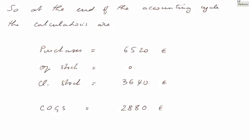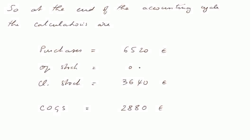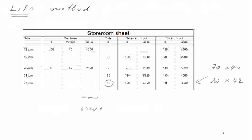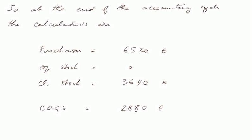Finally, at the end of the accounting cycle, the total purchases amount to 6,520 euros. The opening stocks was zero because it was the first accounting cycle. The closing stocks we just computed is 3,640 euros. Therefore, the COGS is 2,880 euros. This figure can go into the income statement either directly or with the usual formula: opening stocks plus purchases minus closing stocks in credit — so it will be 2,880 euros.